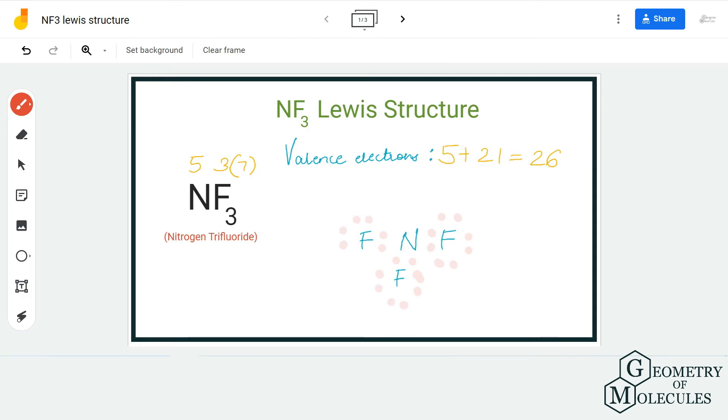Each fluorine atom can now have eight valence electrons in its outer shell. Now we are just left with two more valence electrons to complete this valence electron number. I am going to place this pair of electrons on the nitrogen atom.